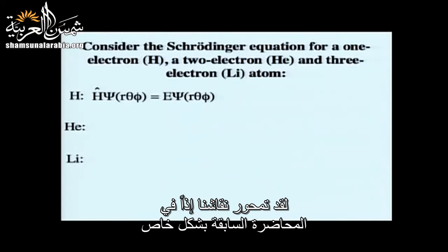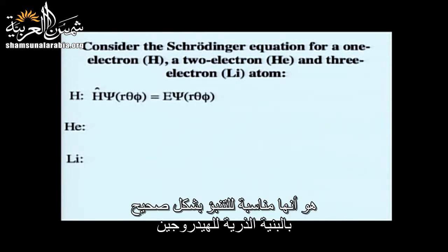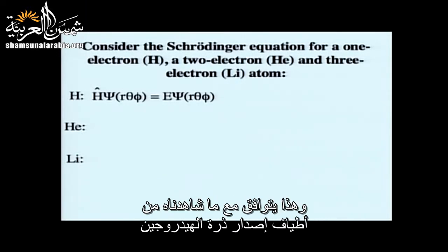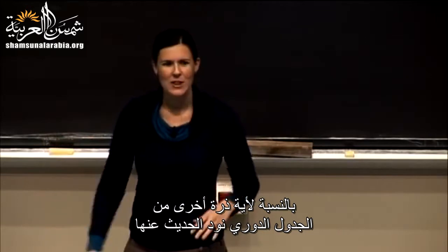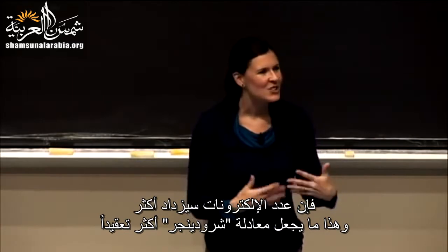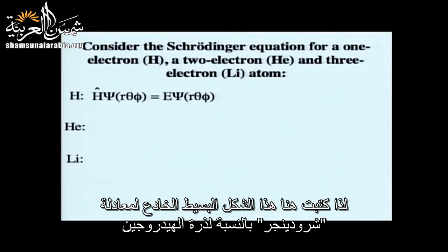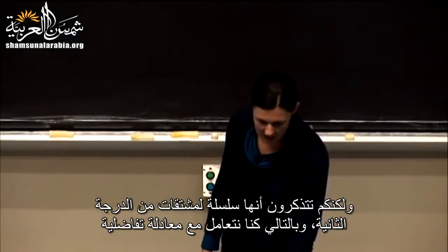The Schrödinger equation correctly predicts the atomic structure of hydrogen and all its energy levels, matching observed emission spectra. We can also use it for any atom in the periodic table. The problem is that as we add more electrons, the equation gets more complicated — it's a differential equation involving second derivatives.